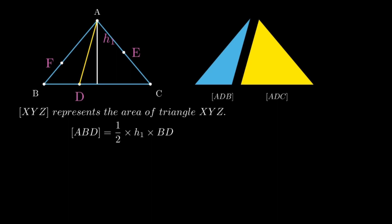Similarly, if we look at triangle ADC, the other part in yellow, it's half into H1 into DC. So if I just take the ratio of them, what I have is BD over DC is ABD over ADC.